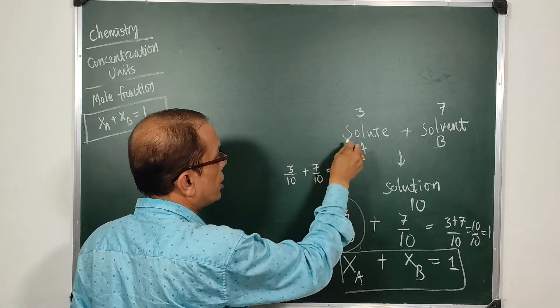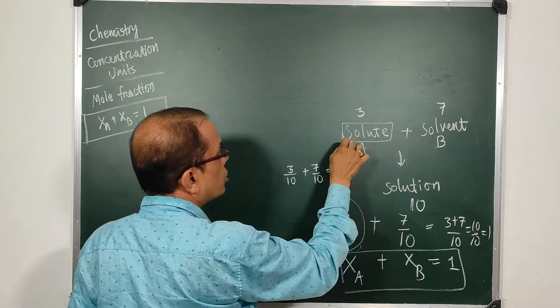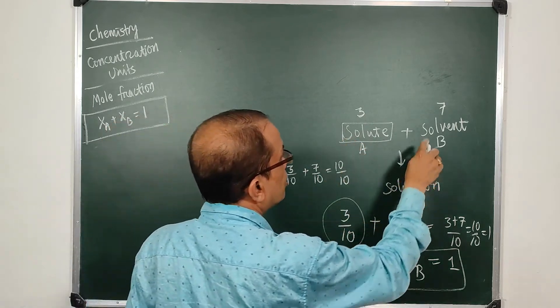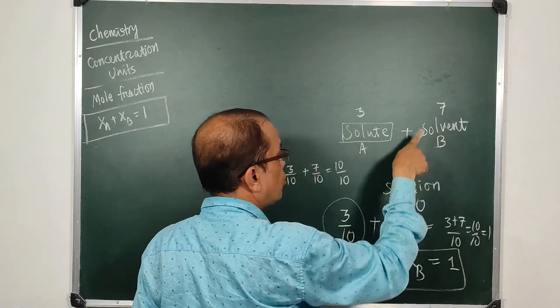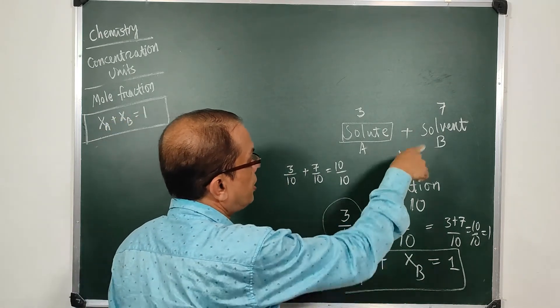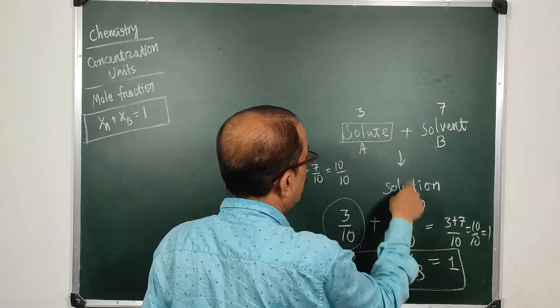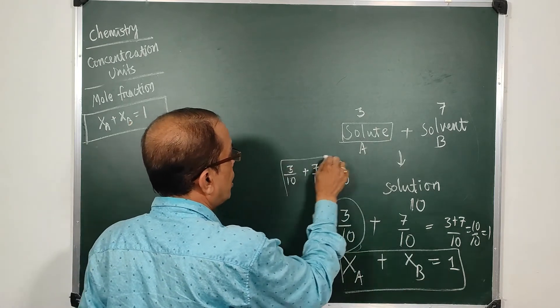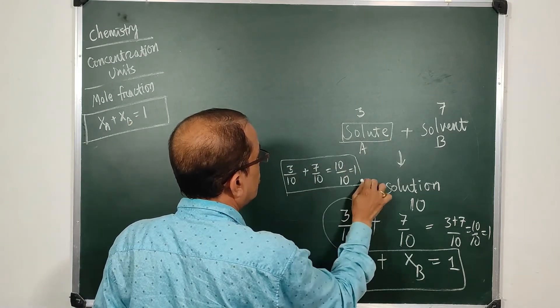This is the solution fraction: hundred in hundred, ten in ten - ten moles of solution in ten moles of solution. In case of solute, three moles are present in the ten moles. In case of solvent, seven moles are present in ten moles of solution. So seven in ten is 7/10, three in ten is 3/10, and when we add we get one. So this is a simple concept, mole fraction.